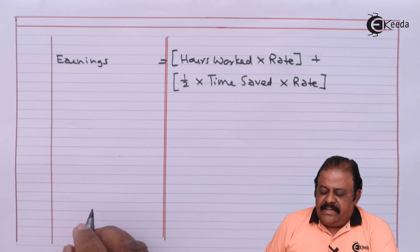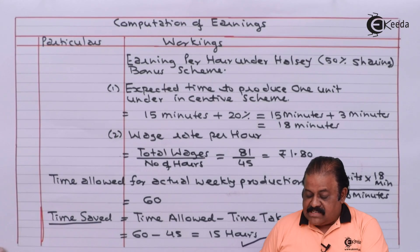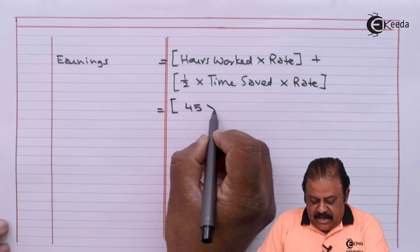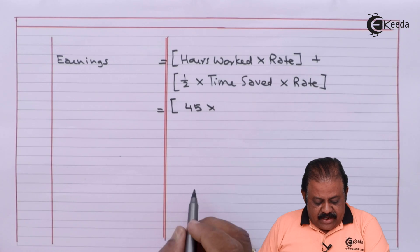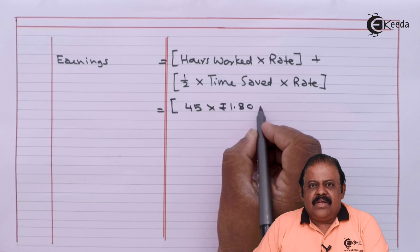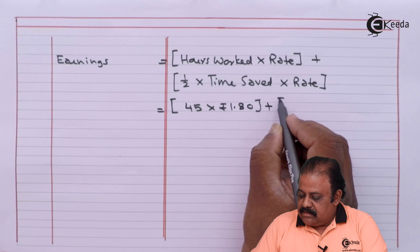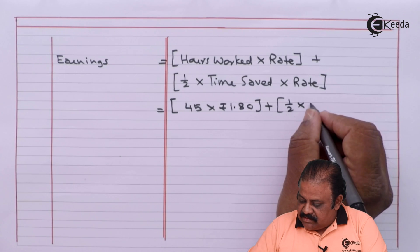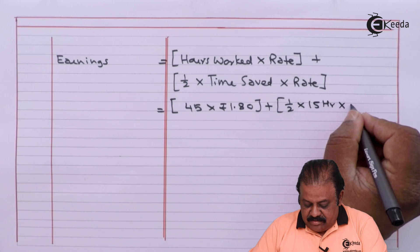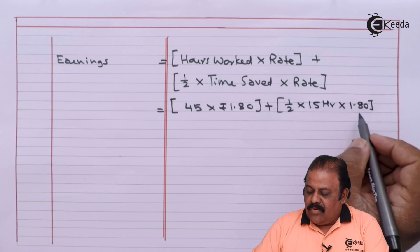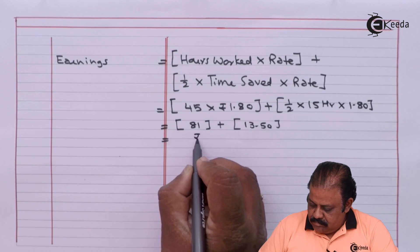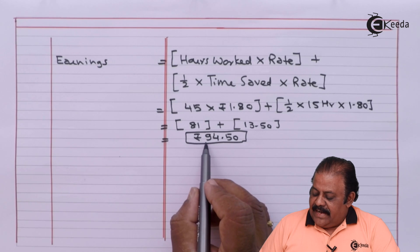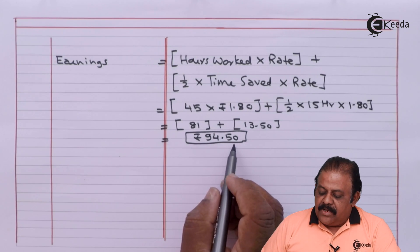Now we can calculate earnings under the Halsey plan. Time saved is 15 hours. The formula is: hours worked multiplied by rate, plus half multiplied by time saved multiplied by rate. That is 45 hours multiplied by 1 rupee 80 paise, plus half multiplied by 15 hours multiplied by 1 rupee 80 paise. This gives total earnings of rupees 94 and 50 paise under the Halsey plan.